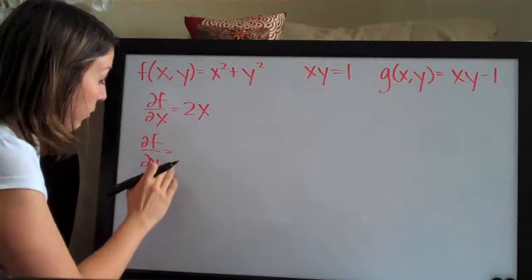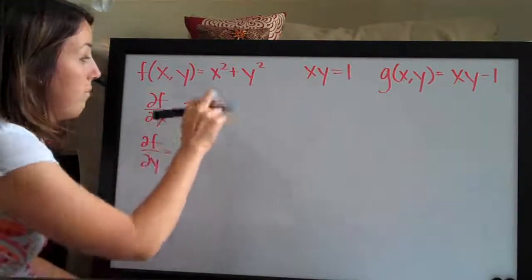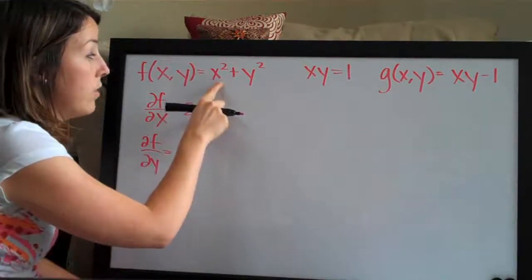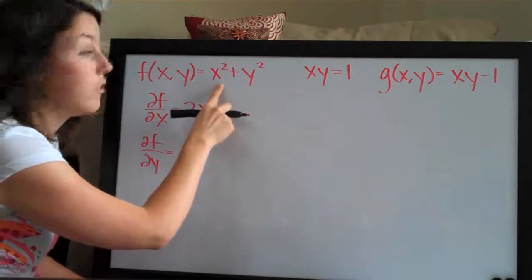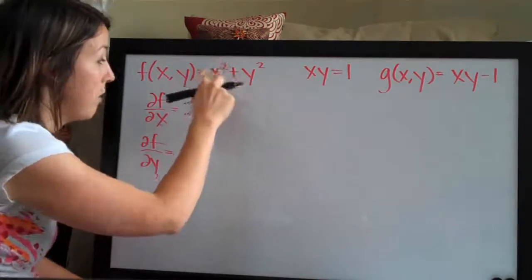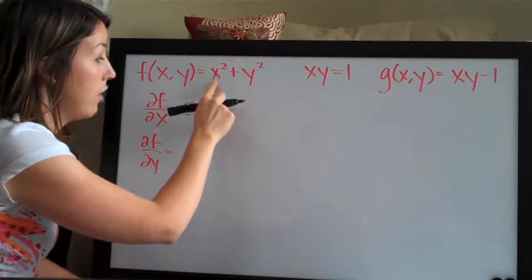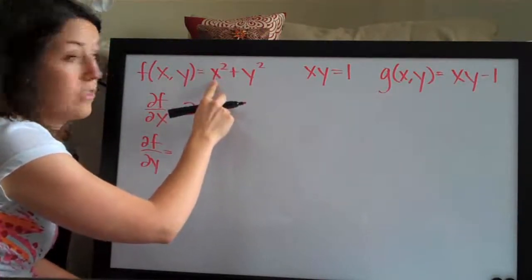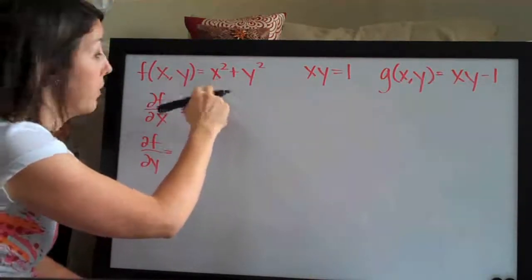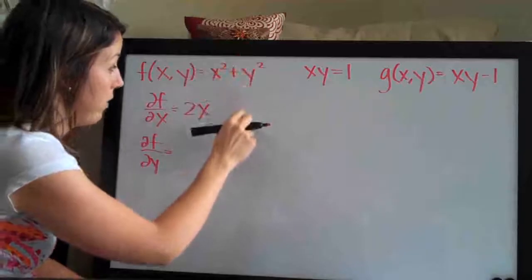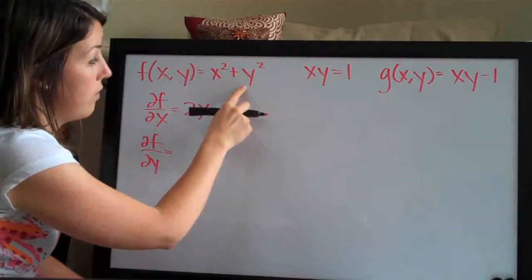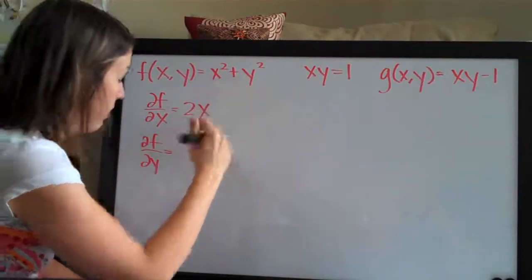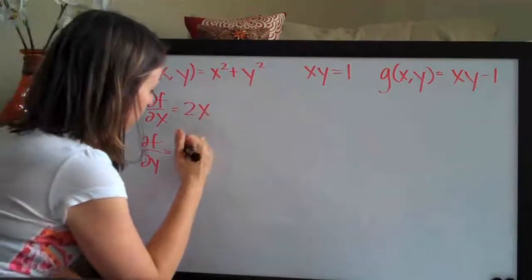With respect to y, we have the same idea. We treat x as a constant, so the x squared term cancels out to 0, and the derivative of y squared is just 2y.